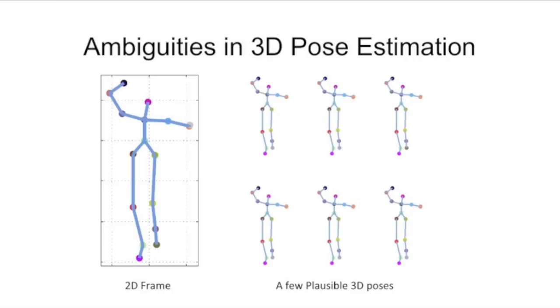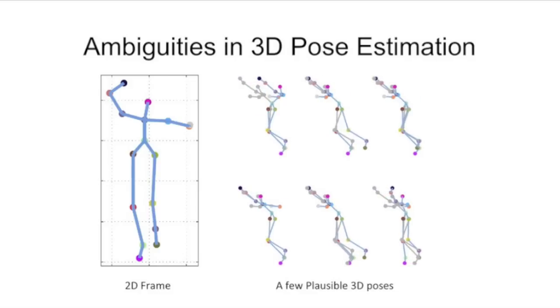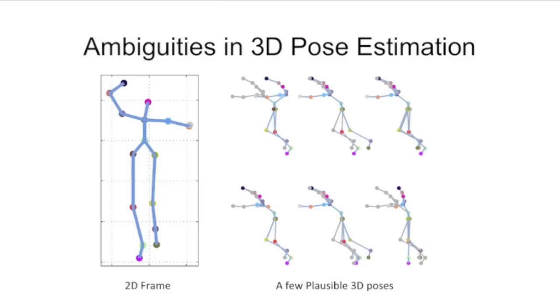The problem of estimating 3D pose from a single image is inherently ill-posed, and there exist several plausible 3D poses, all resulting in the same image observations.